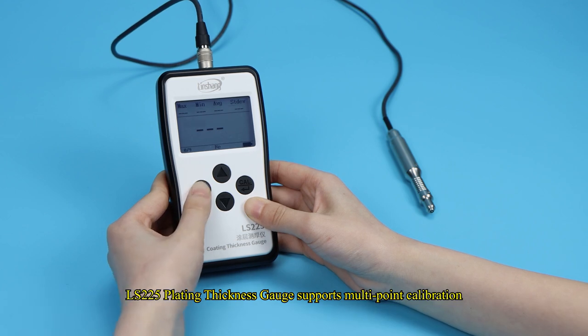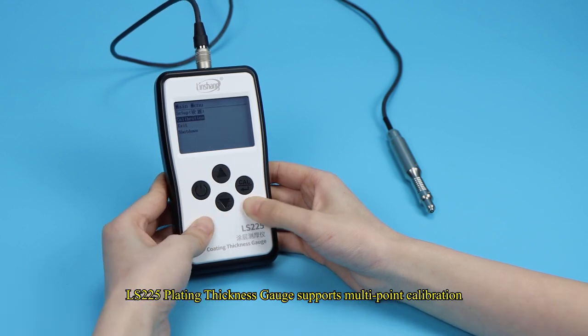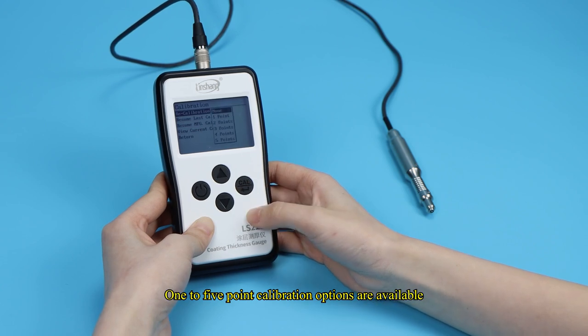LS-225 plating thickness gauge supports multipoint calibration. 1 to 5 point calibration options are available.